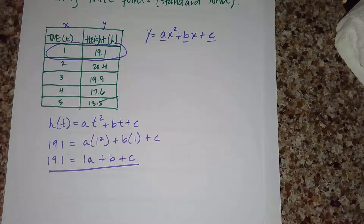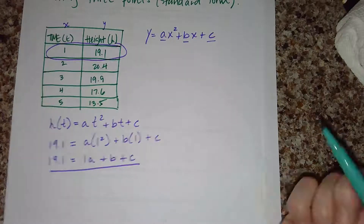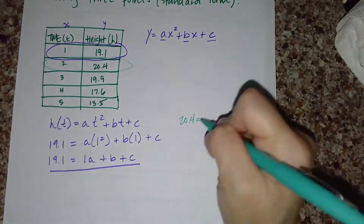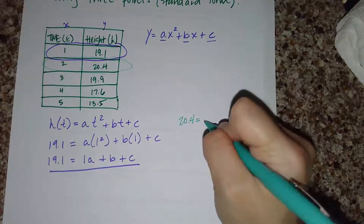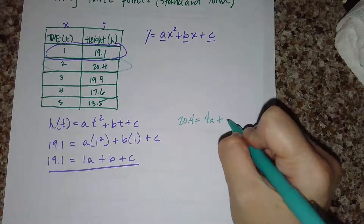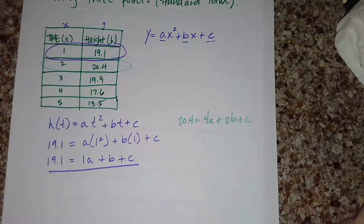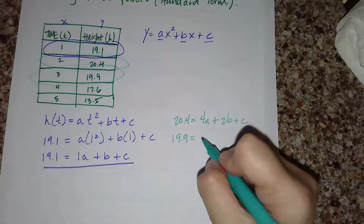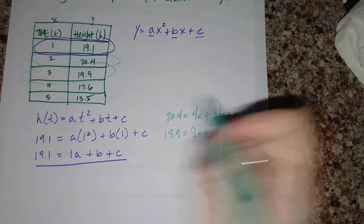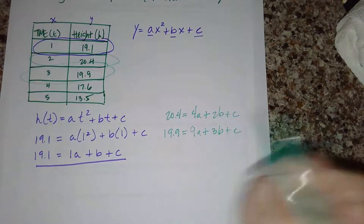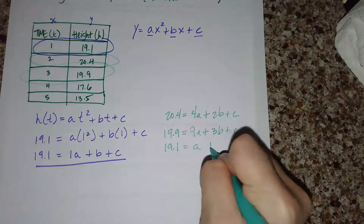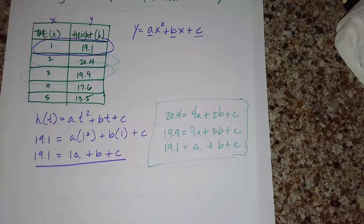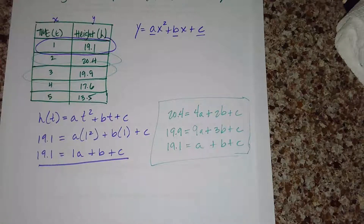Now I do the exact same thing with two other points. For (t = 2, h = 20.4): 20.4 equals 4a plus 2b plus c. For the next point (t = 3, h = 19.9): 19.9 equals 9a plus 3b plus c. So now I have a system of three equations: 19.1 = a + b + c, 20.4 = 4a + 2b + c, and 19.9 = 9a + 3b + c.